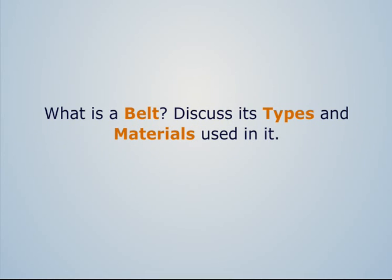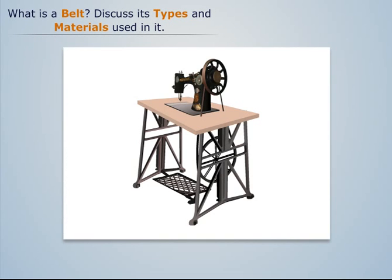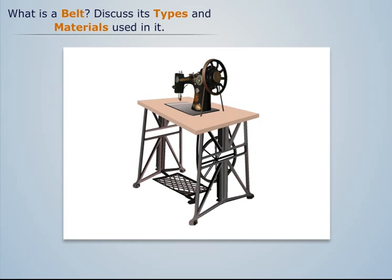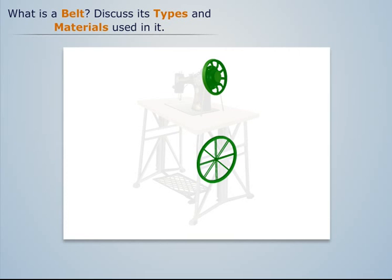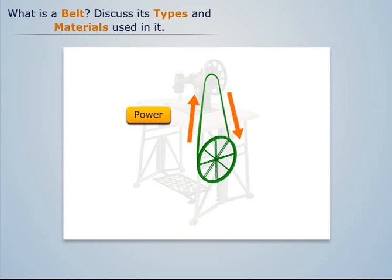What is a belt? Discuss its types and materials used in it. You must have seen a sewing machine. It consists of a small wheel driven by a larger wheel, which is run by feet. Here the two wheels act as pulleys and are connected to each other by a rope which is in tension. When the machine is run, the rope transmits power from the larger wheel to the smaller one and runs the machine.